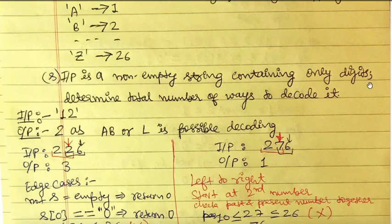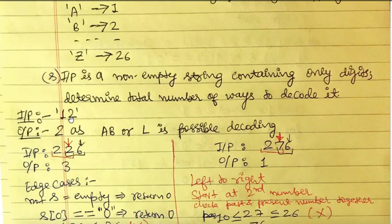We are given a non-empty input string of digits — the encoded version — and we have to determine the total number of ways we can decode it. For example, given input '12', we can decode 1 and 2 separately, or decode 12 as one number, since numbers 1 to 26 can each represent a letter. So the output is 2 because there are two ways to decode it.